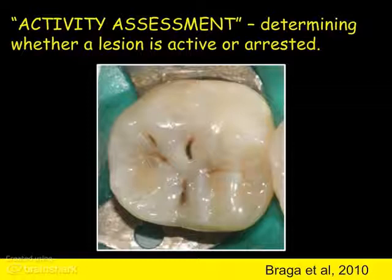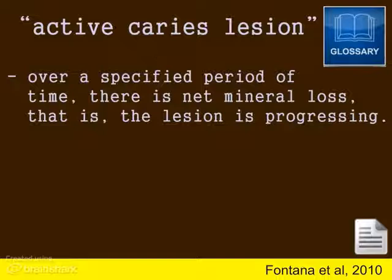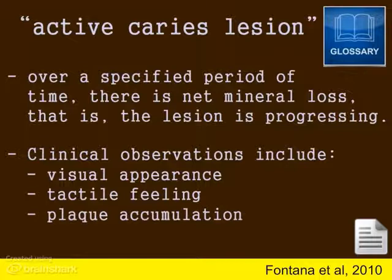Now let's look at the definitions you have already read from a published glossary on cariological terms. Hopefully, this video will help if you did not completely understand this when you read it. With an active lesion, over a specified period of time, there is a net mineral loss — that is, the lesion is progressing. Clinical observations include visual appearance, tactile feeling, and plaque accumulation. Since it is active, we should treat it, either conservatively or operatively.